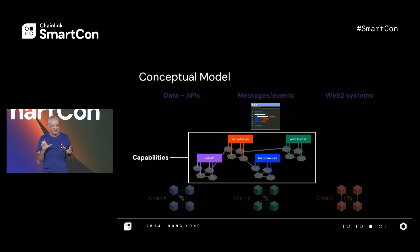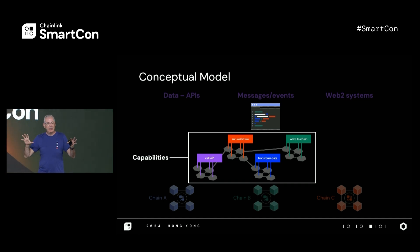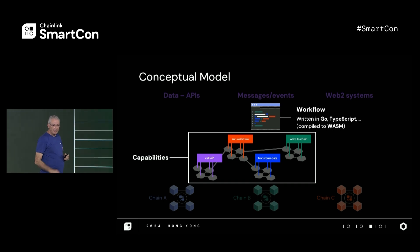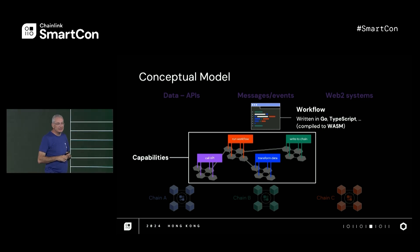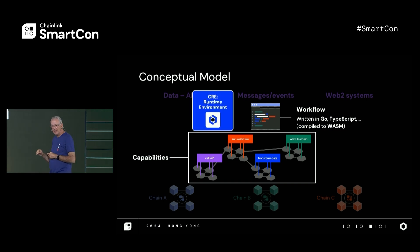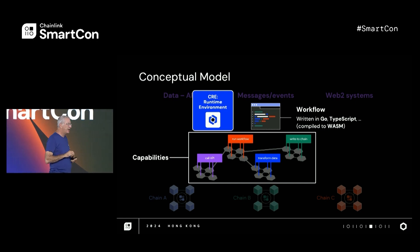Your workflow is written in code — it can be Go or TypeScript. We compile it down to WASM, and that WASM is then what's actually executed on the appropriate nodes. In your code, you simply invoke the capabilities. The execution and coordination of the DONs for each capability you called, combined with a consensus overlay, is what the Chainlink Runtime Environment — the CRE — provides you.